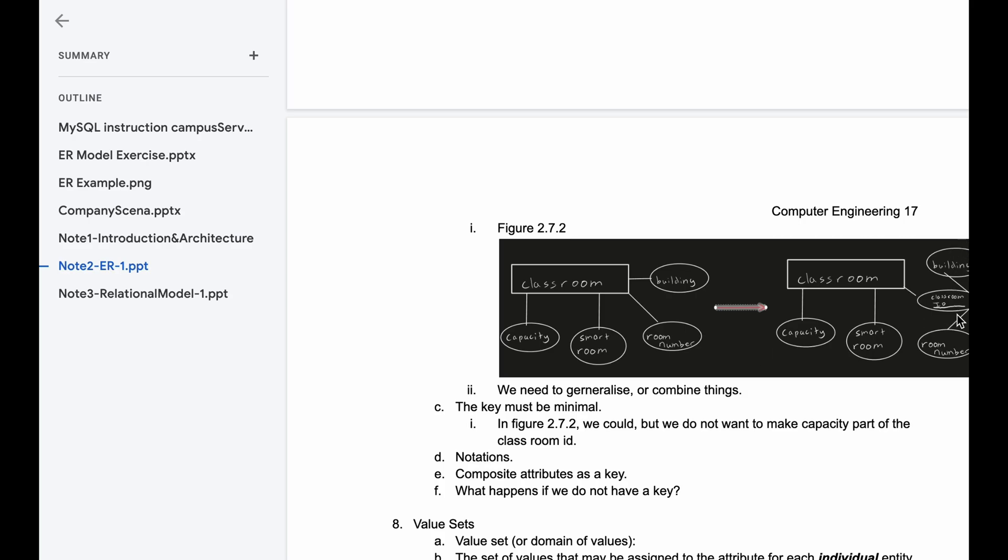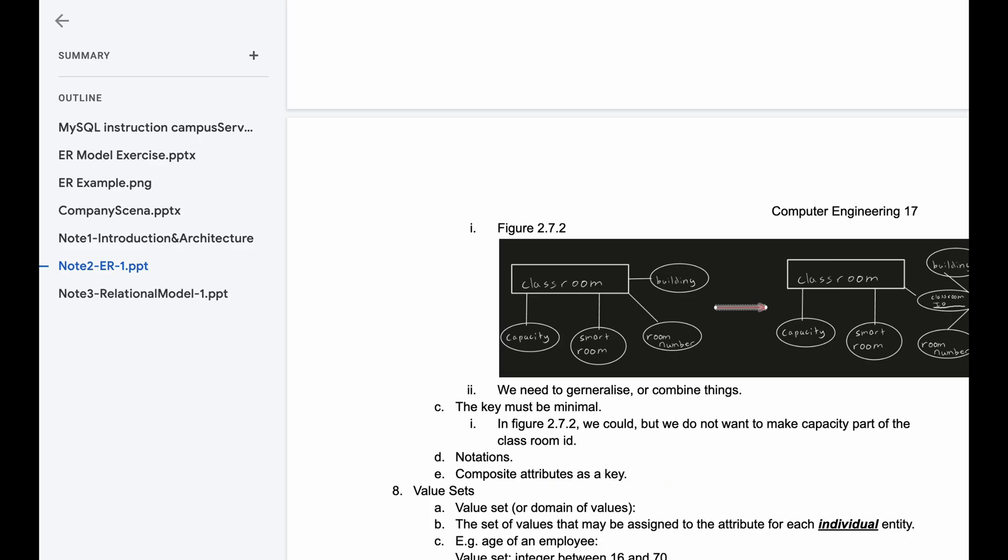The key should be minimal. In our figure right here, we could, but we don't want to make the capacity part of the classroom ID. So we leave it by itself because we want it to be minimal. These are composite attributes as a key, and this is what happens when we do not have a key.